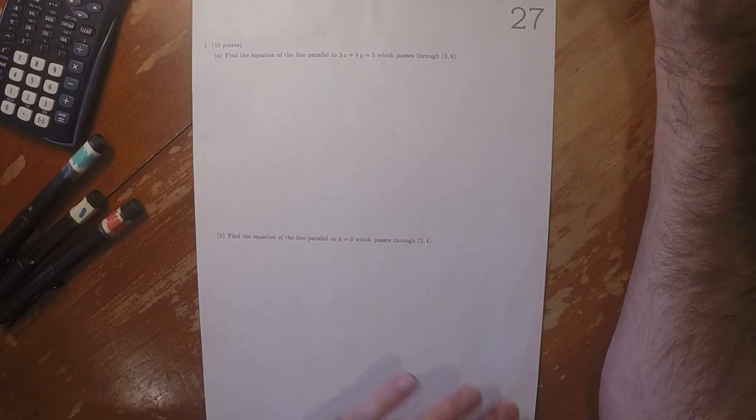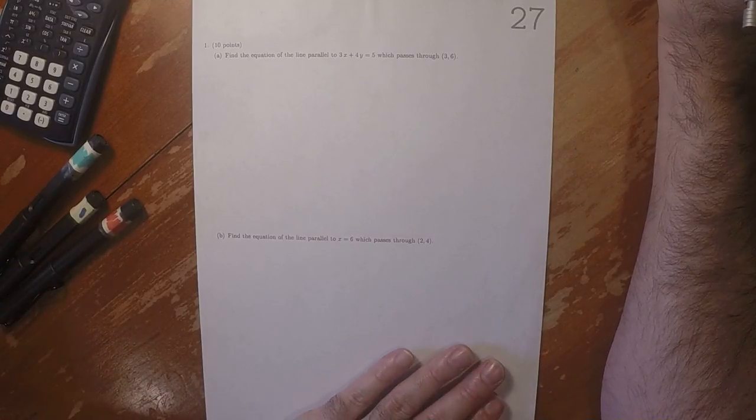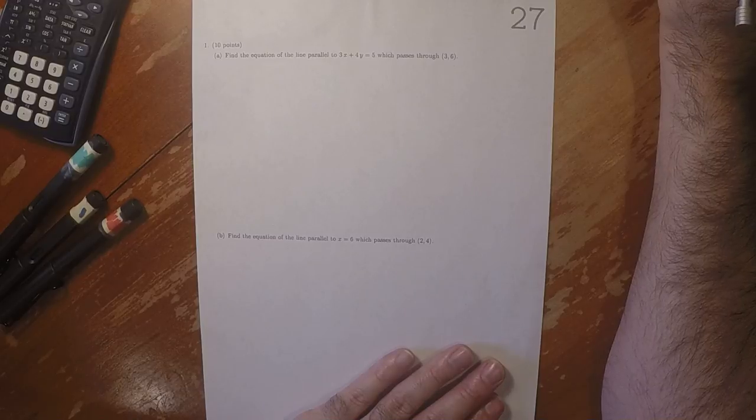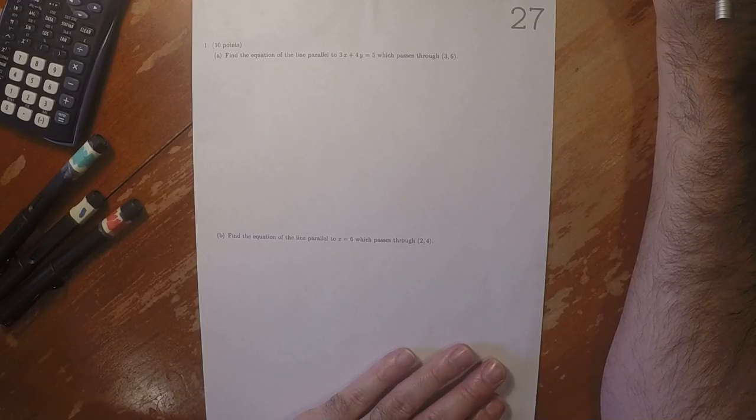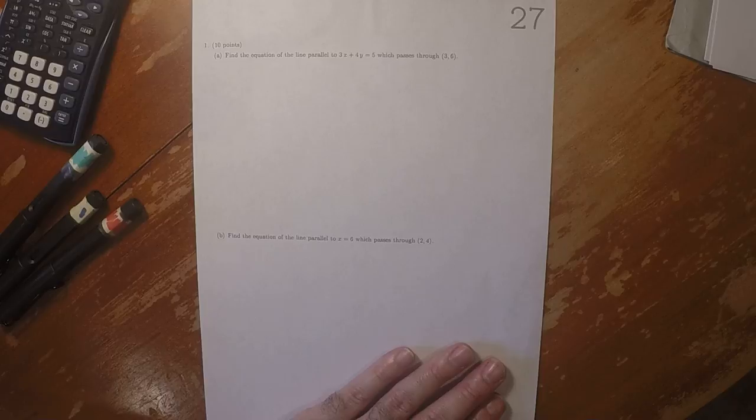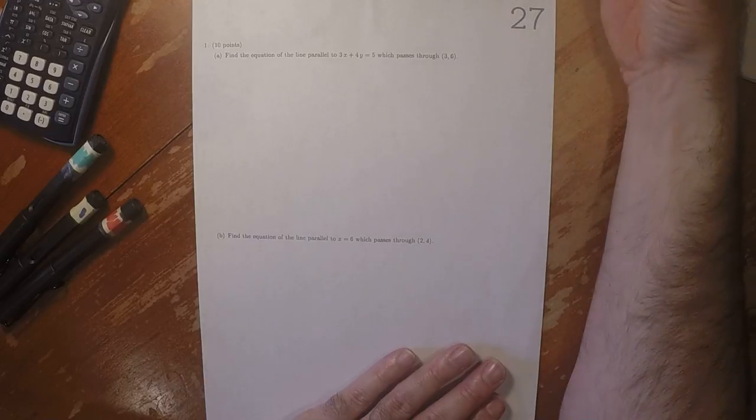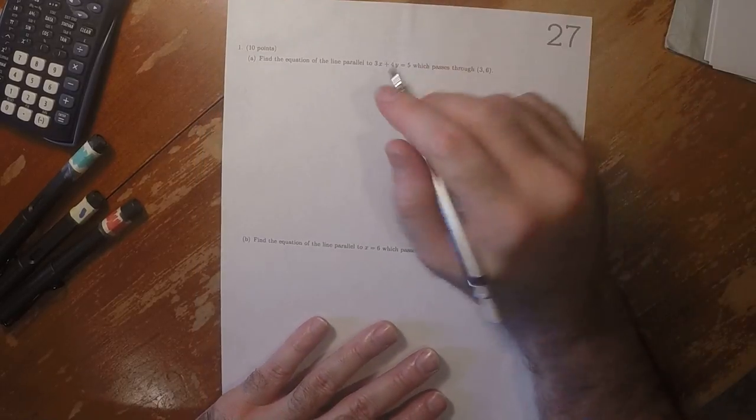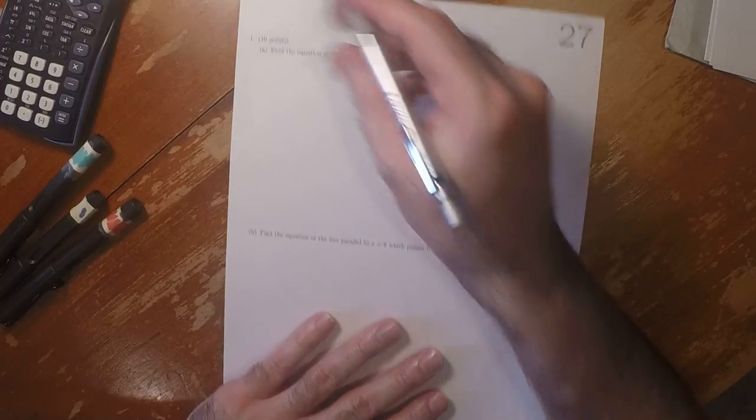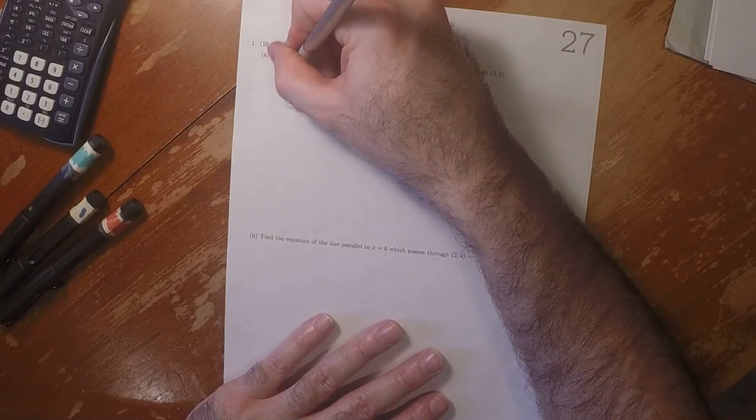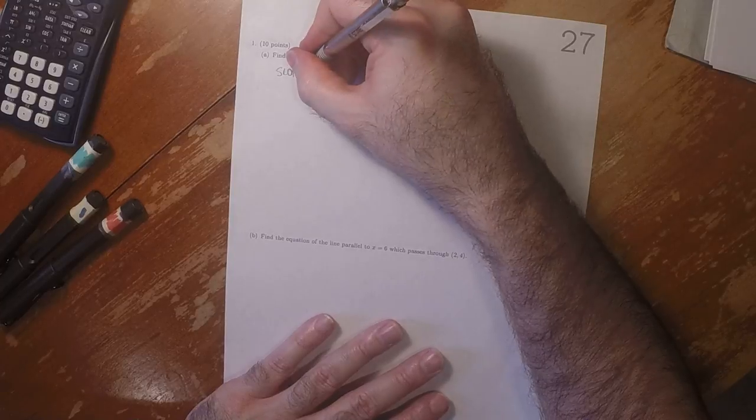This is the solution to written homework 27. So, the fact that we're looking for a line which is parallel to that one, well, that tells us what the slope of the line we're looking for is.